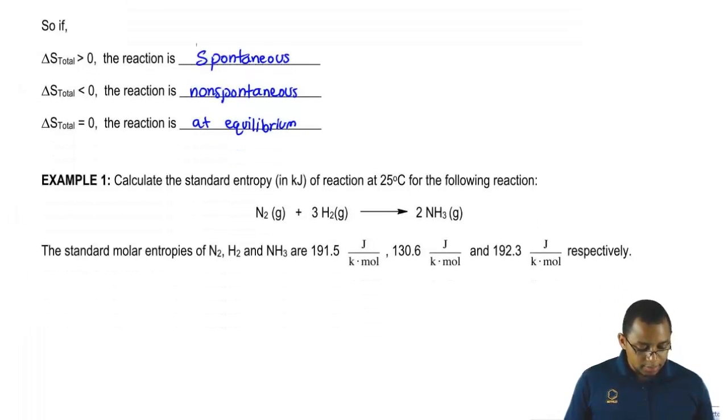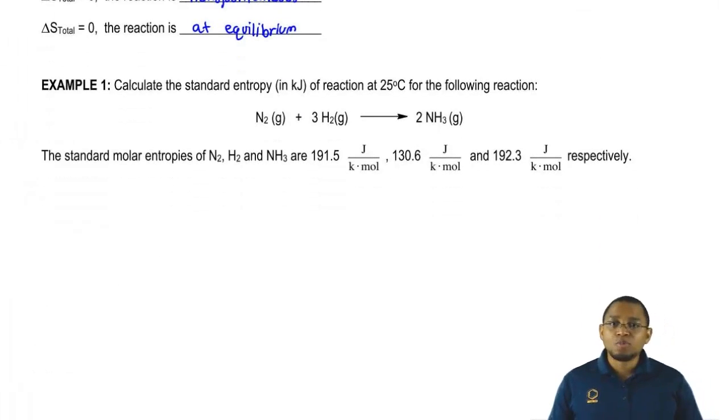If we take a look here, it says calculate the standard entropy in kilojoules of a reaction at 25 degrees Celsius for the following reaction. We have 1 mole of nitrogen gas combining with 3 moles of hydrogen gas to give us 2 moles of ammonia gas as product.